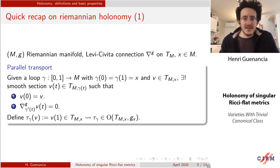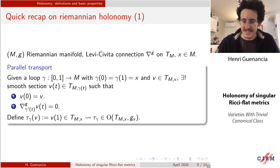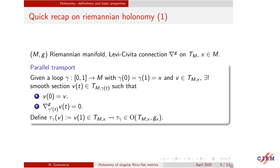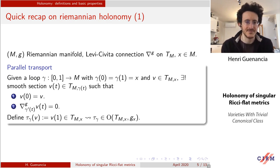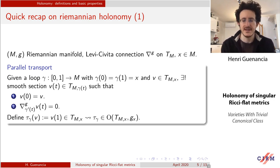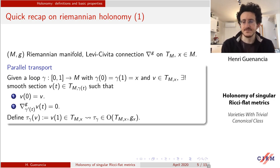I want to come back to basic notions of differential geometry that will be very useful. I'll spend a few slides defining holonomy, and more specifically Riemannian holonomy. This is a classical and beautiful notion from differential geometry. The setting: we just have a Riemannian manifold with Riemannian metric G and the Levi-Civita connection nabla_G on the tangent bundle TM of M. I fix a point x as my base point.